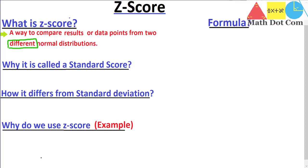The word 'different' is very important. Z-score is basically used when you have two distributions that are different from each other. Different means their standard deviations differ and their means differ. But we can compare the scores or values of those two distributions using a z-score. We usually miss this point while understanding z-score — that the two normal distributions should differ so that we can make a meaningful comparison.